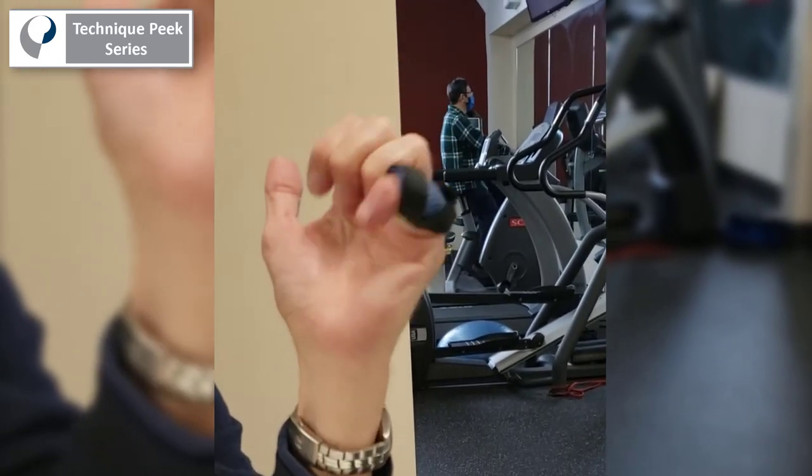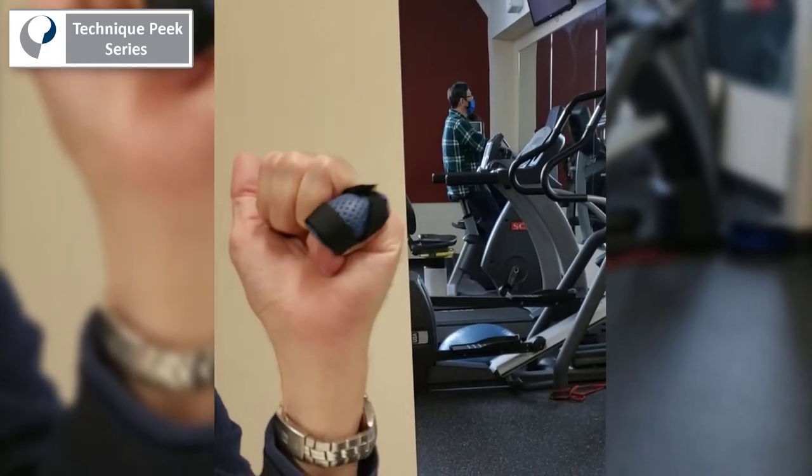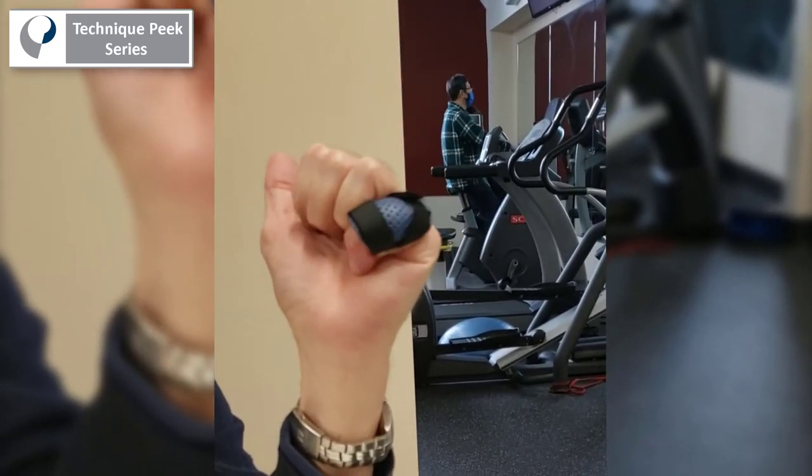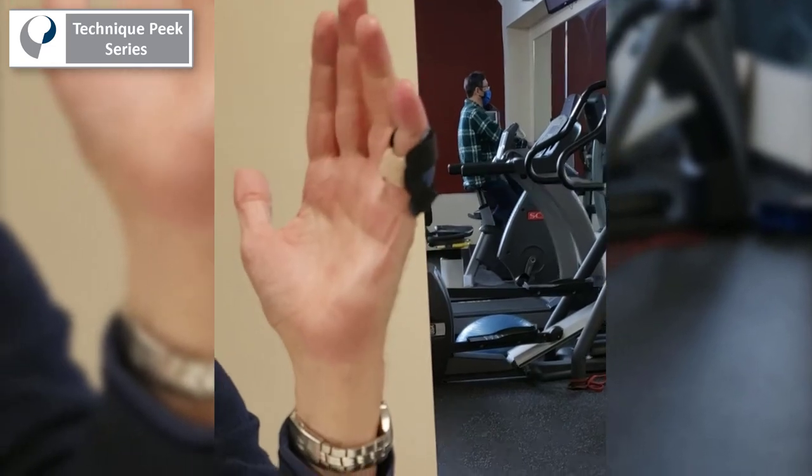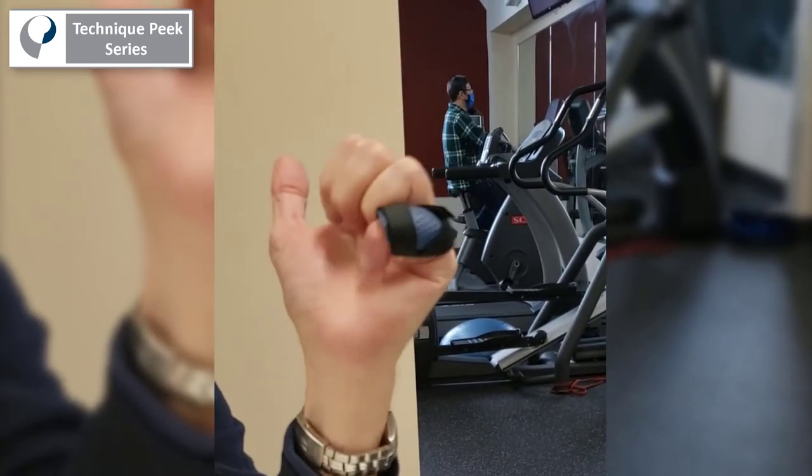While donning that splint, you can see that he is able to actively make a full fist and extend to the limit of the blocking splint with no difficulty, allowing him to have full functional use of his hand despite the swan neck deformity.